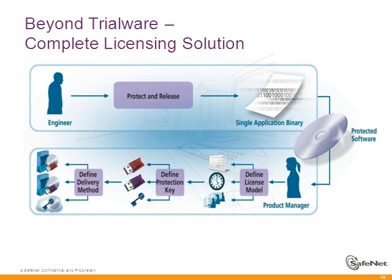Taking a step back to show a high-level picture of the solution: we've simply separated the engineering from the business process. Engineering resources protect the application and produce a single binary, then they're out of the equation until the next build. With this application, product management or the business team can define the license models and the different key types — hardware or software. Any time you need to alter a license type, upgrade, or extend licenses, you don't need to call engineering back — the license is bound inside the key securely, not inside the application.